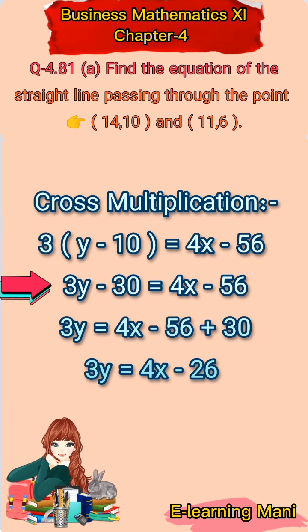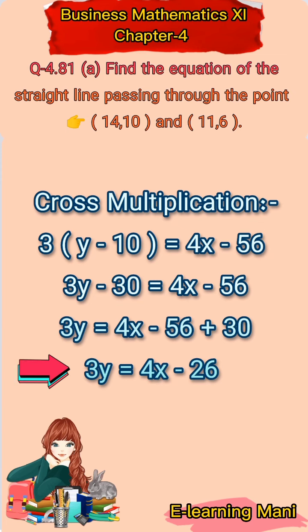3y minus 30 is equal to 4x minus 56। अब minus 30 को दूसरी side पर shift करेंगे तो plus 30 में change होगा। So 3y is equal to 4x minus 56 plus 30। Subtract करेंगे: 56 minus 30 आएगा 26। So 3y is equal to 4x minus 26। यह हमने equation find कर ली।